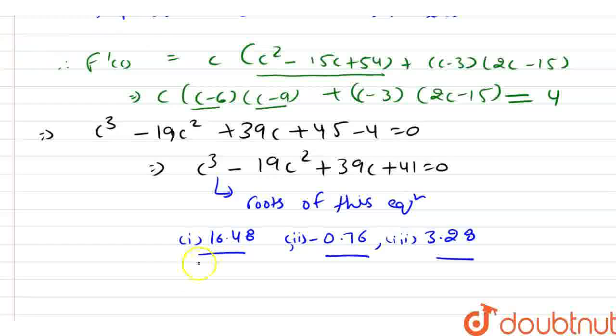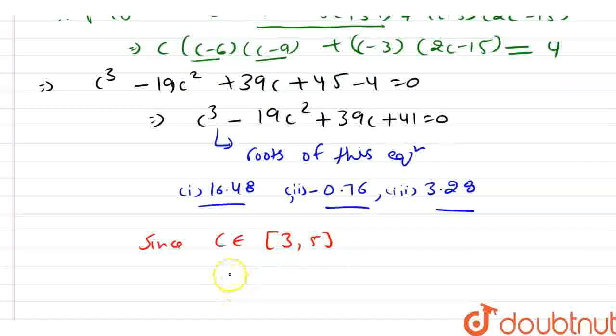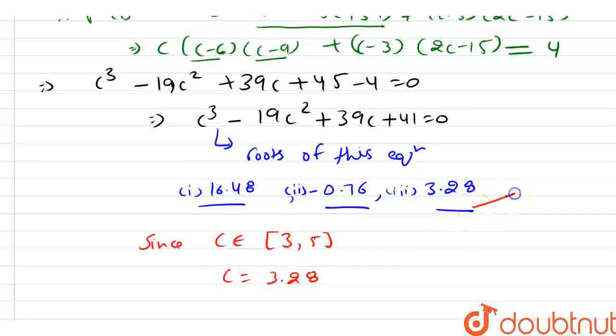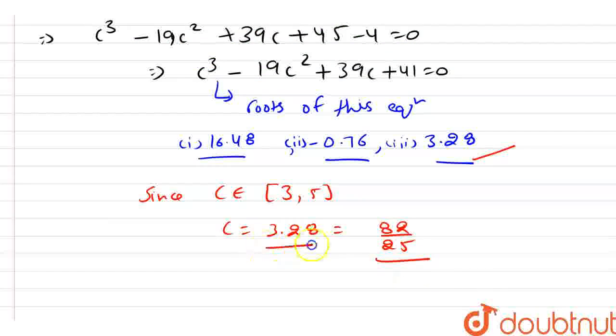Now, as we know that since c belongs to the interval (3, 5), from here we have c = 3.28, which is equal to 82/25. This is our answer. Thank you.